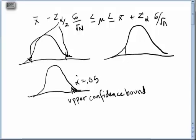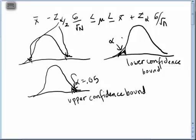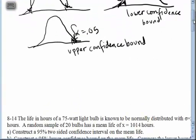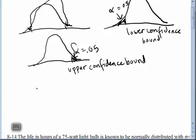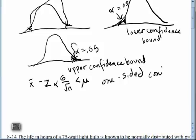Let's say that alpha was 5%, 0.05. Then that whole 0.05 would fall right there on one side — we don't have to worry about the other side. And likewise for our lower confidence bound, that would all be alpha equal to 0.05. So what we're actually dealing with looks like: x-bar minus z-alpha times sigma over the square root of n is less than the mean. That's a one-sided confidence bound.